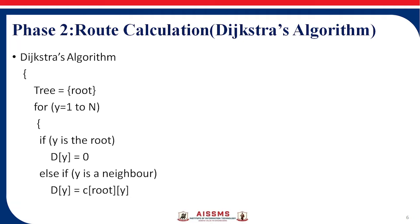Now today we will go with the second phase of this routing. In the second process, we calculate the route using Dijkstra's algorithm. This second process is the Dijkstra's algorithm, and it is used to find the shortest path.